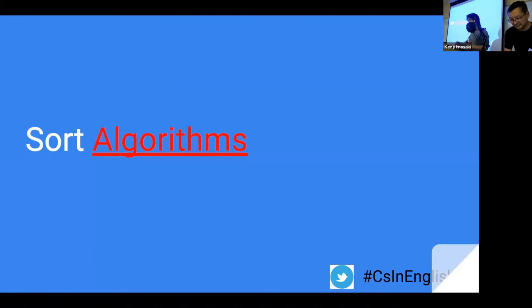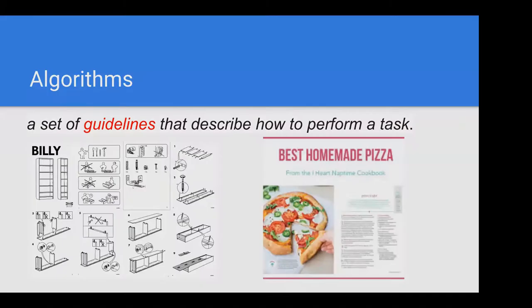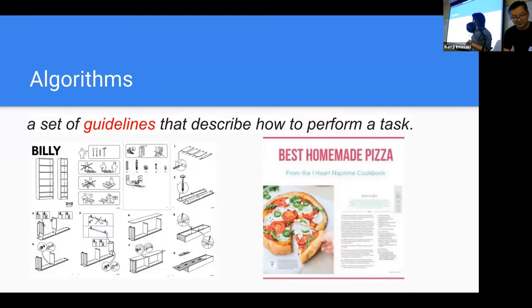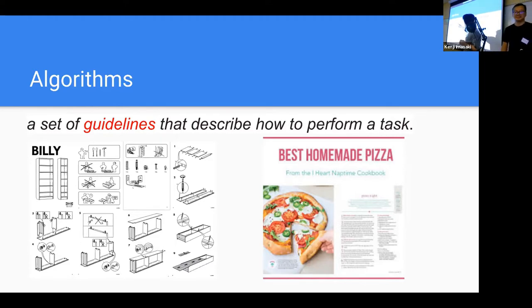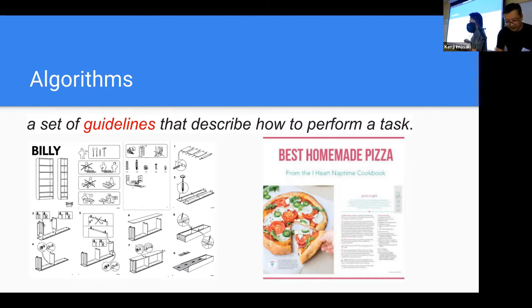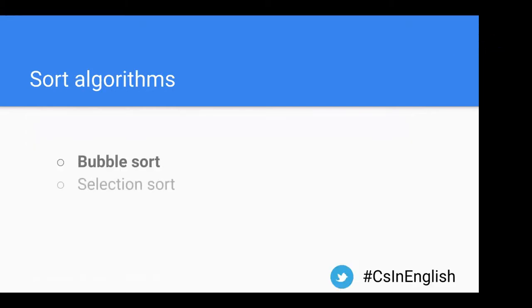Now let's talk about algorithms. An algorithm is a set of guidelines that describe how to perform a task — step-by-step instructions to accomplish something. Like an IKEA manual, your parents probably use it to make furniture. It has step-by-step instructions to build something. A home recipe for pizza is the same idea — step-by-step instructions on how to make something. So sort algorithms are step-by-step instructions on how to sort or organize.